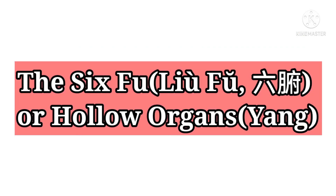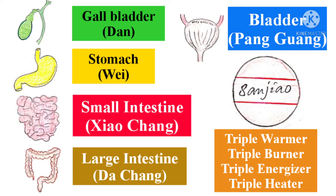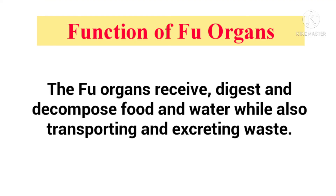The six Fu, or hollow organs, are gallbladder, stomach, small intestine, large intestine, bladder (or urinary bladder), and triple warmer, or Sanjiao. Fu organs are the internal organs which receive, digest, and decompose food and water, while also transporting and excreting waste.